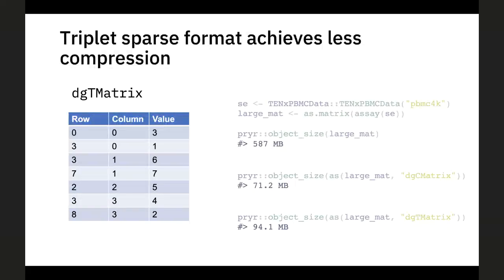Am I right in thinking that the 10x Genomics format they distribute is an HDF5 file but with essentially the DGC format in there? I don't know if they were the first or just following the convention, but it's another instance where that format is used in the raw data you receive. That's a very good point — 10x Genomics could be one of the players in the field who shaped the trajectory of what people actually use.